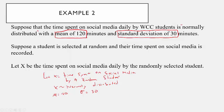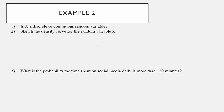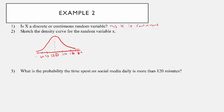I know this is another time example, but not all normally distributed problems will be around time — I just picked two because I think they're a little interesting. X here is again a continuous random variable. Sketching the density curve centered at 120, we add standard deviations: going up, 150, 180, 210; going down, 90, 60, 30.